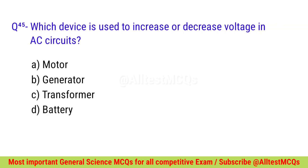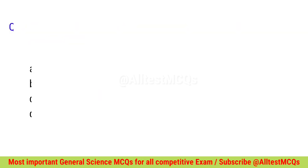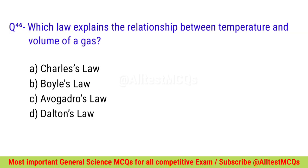Question number forty-five: Which device is used to increase or decrease voltage in AC circuits? Correct option is C — Transformer. Question number forty-six: Which law explains the relationship between temperature and volume of a gas? Correct option is A — Charles's law.